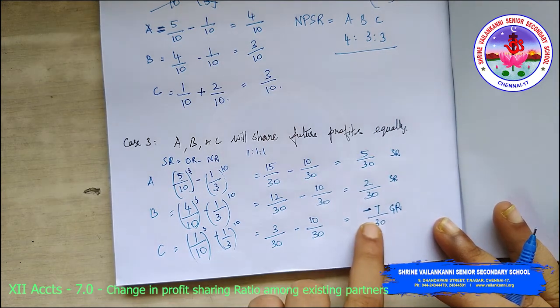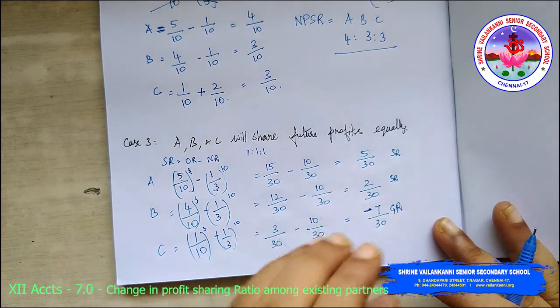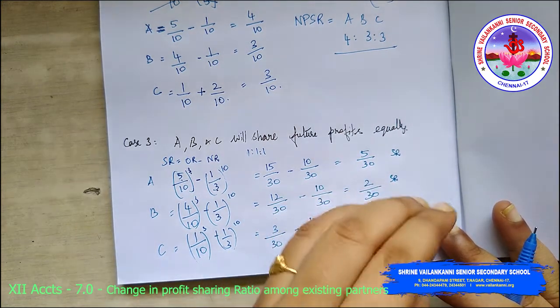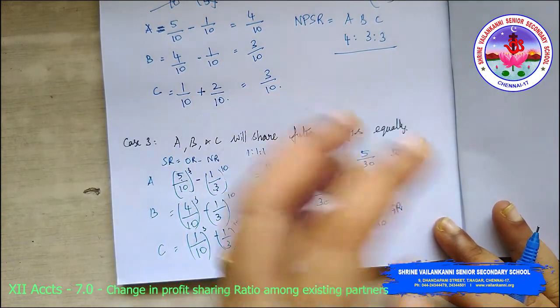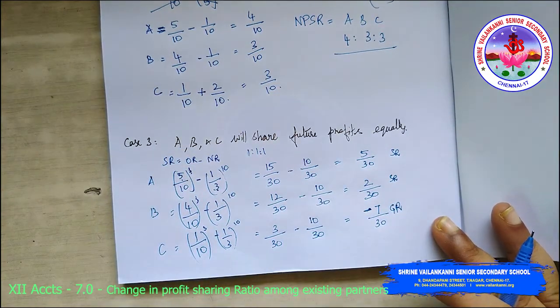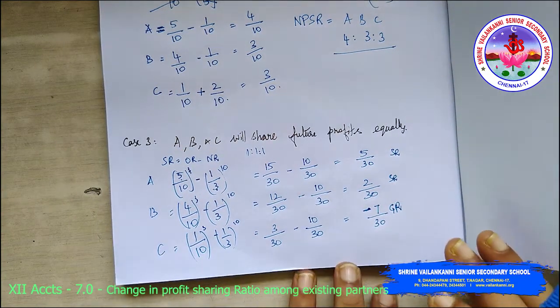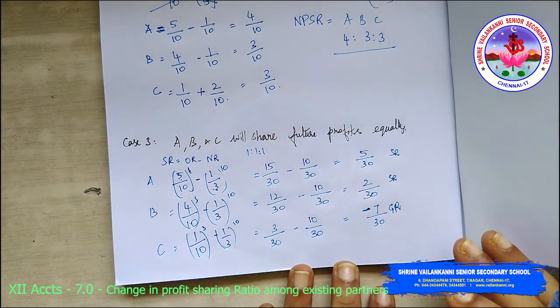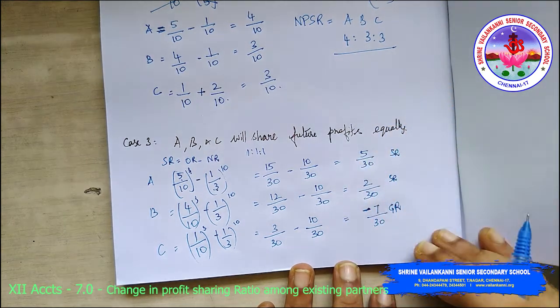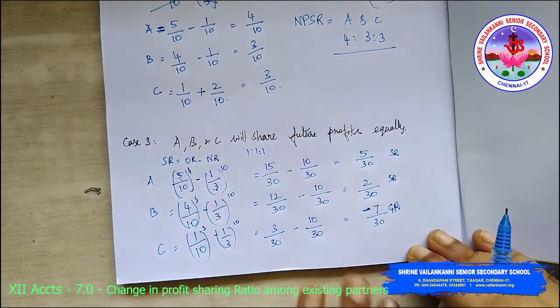Even though C shows a negative figure in sacrificing ratio, don't worry — it is a gaining ratio. So C's gaining ratio is 7/30, meaning new ratio for C gives a positive 7 when computed as new minus old.